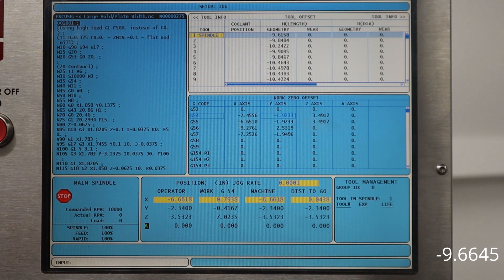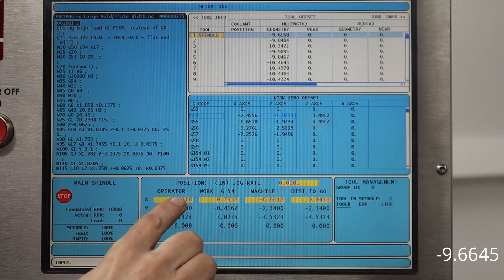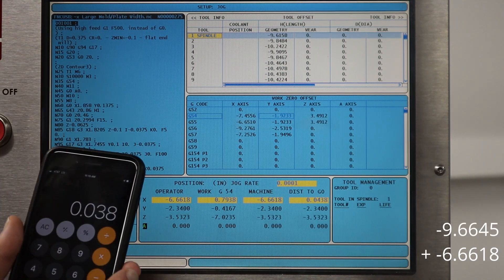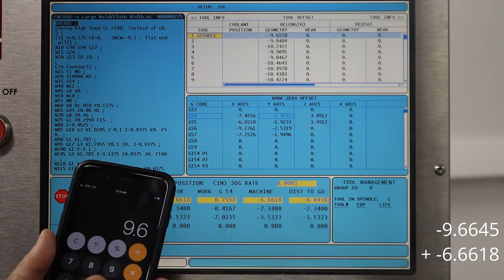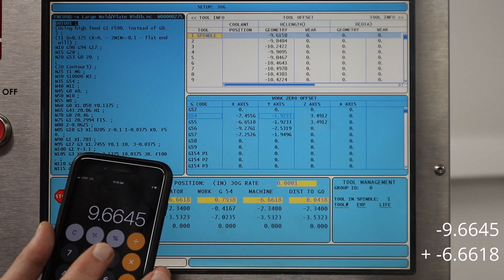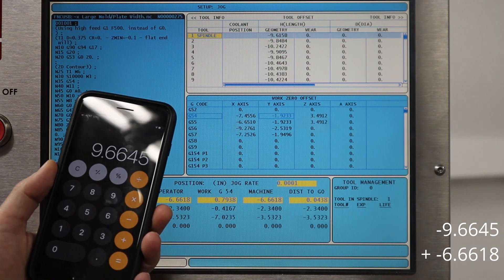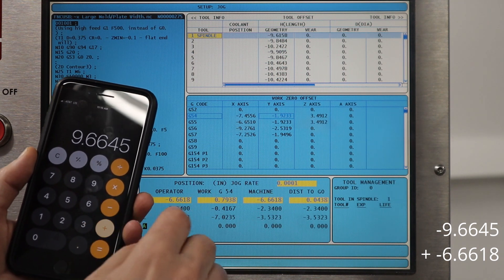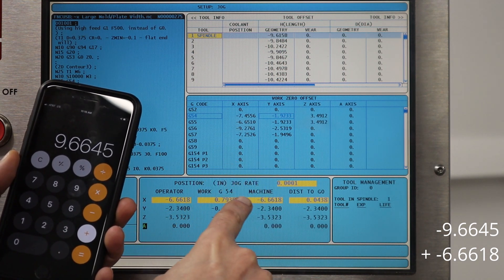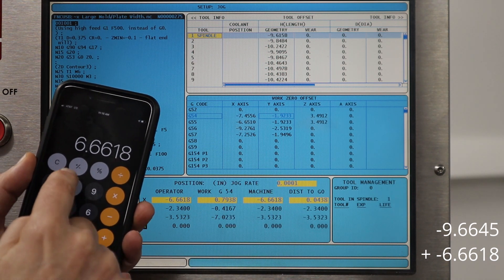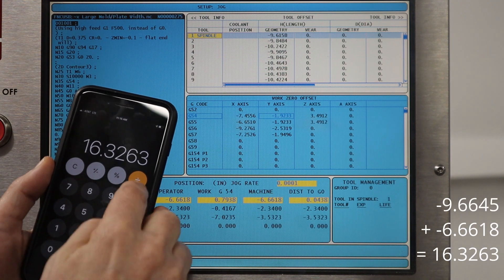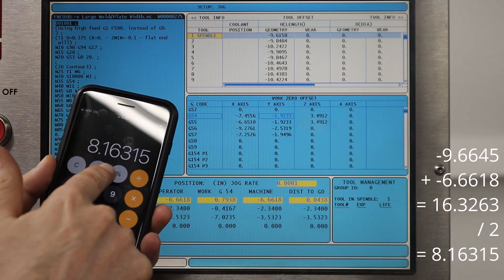Now that's set for the other side, so here we have 6.6618. Then I'll take the first number which is 9.6645 and I'm ignoring the sign for the moment. Then I'm going to add the new number which is 6.6618 and then divide by 2, and that gives me the center position.